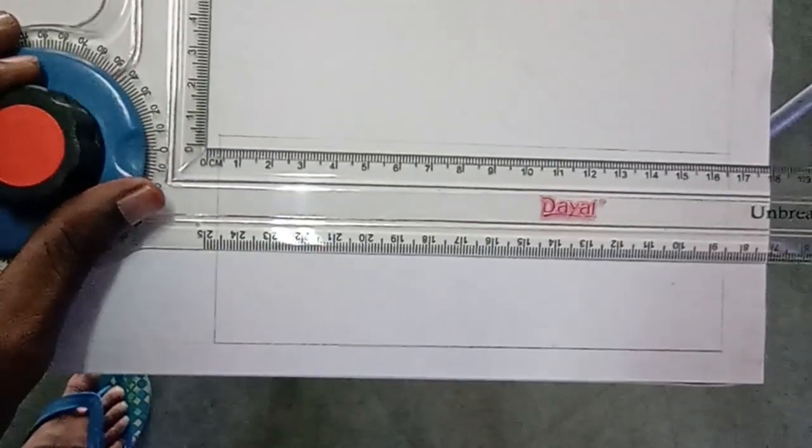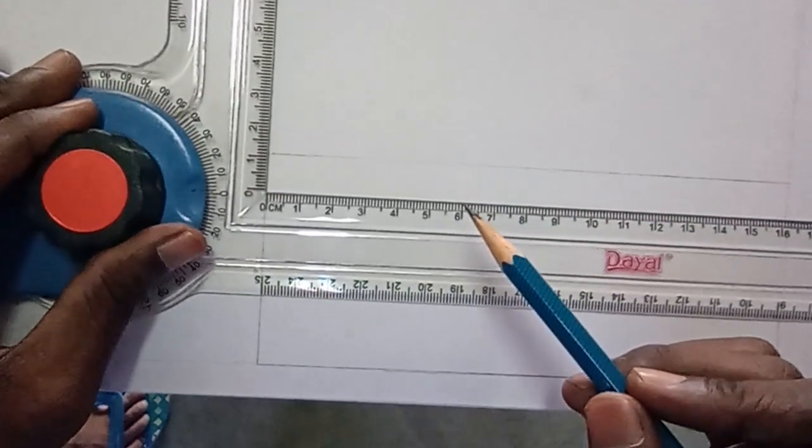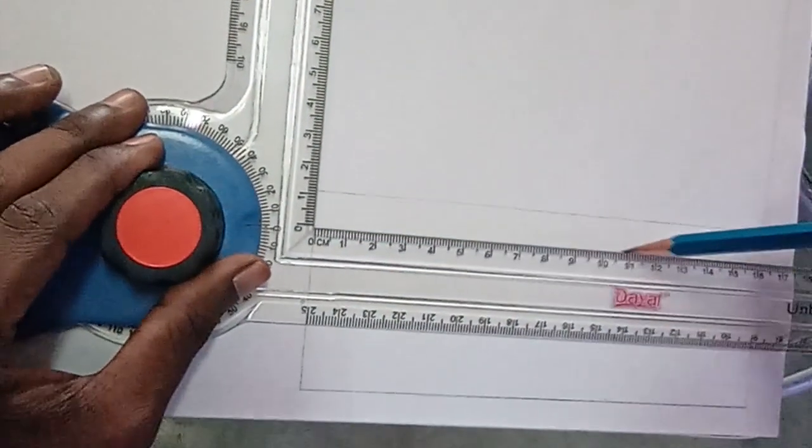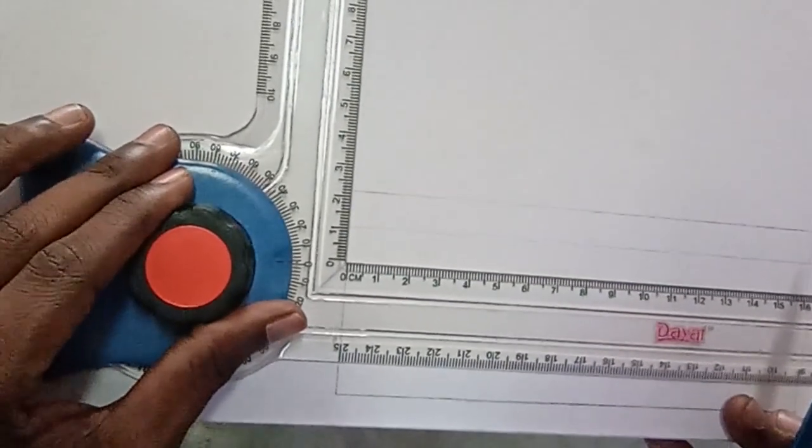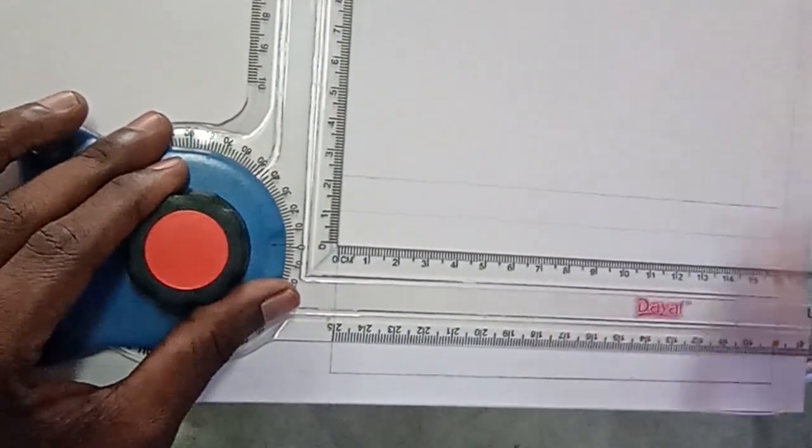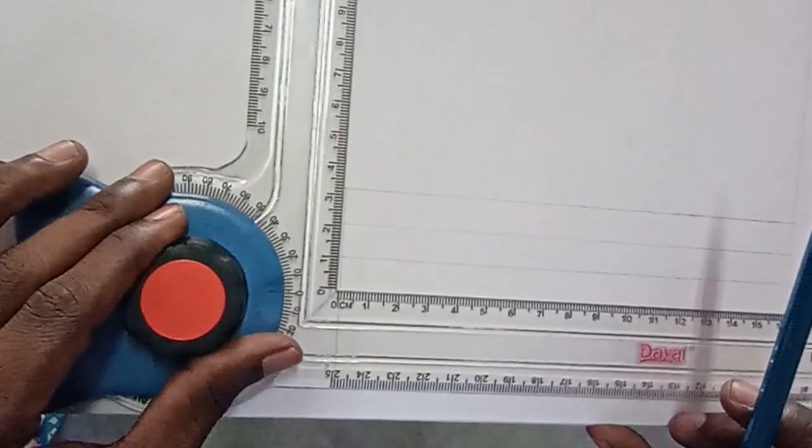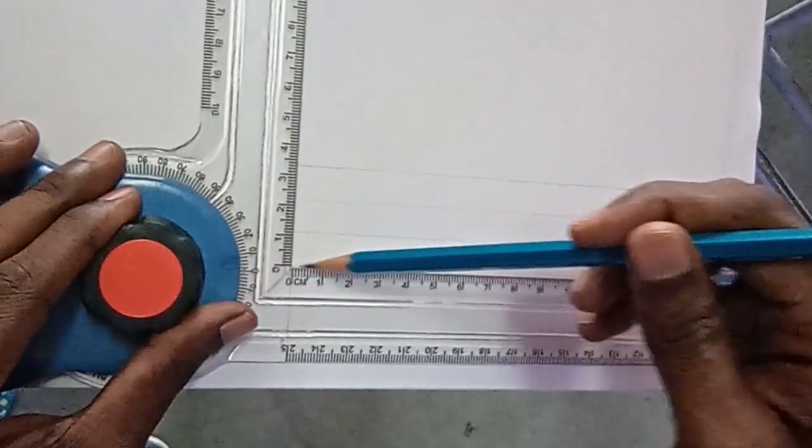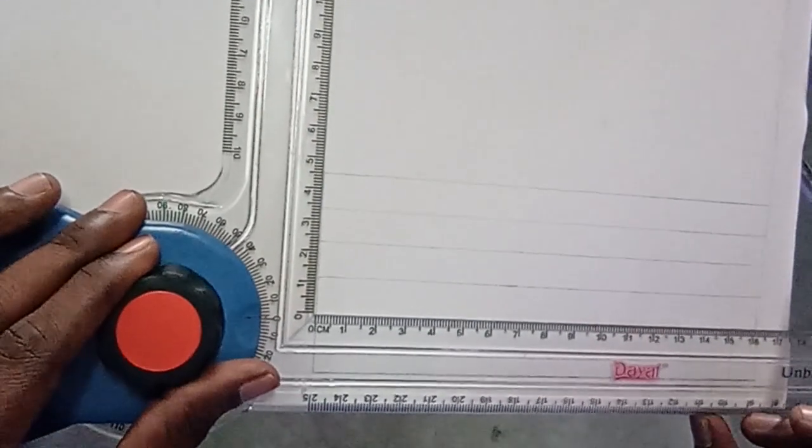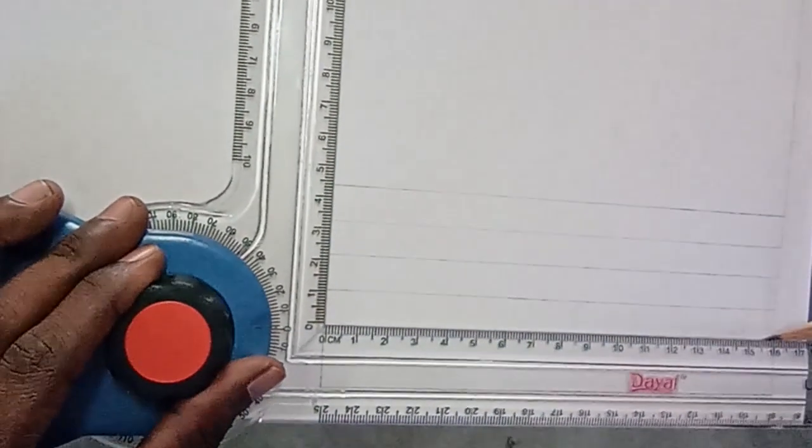After that, from the top we have to make 4 segments of 10mm each. We will make 4 parallel lines of 10mm each. As you are using a drafter, you don't need to think about parallel because it will always be making parallel lines. One, two, three, and four. So 4 divisions are done.